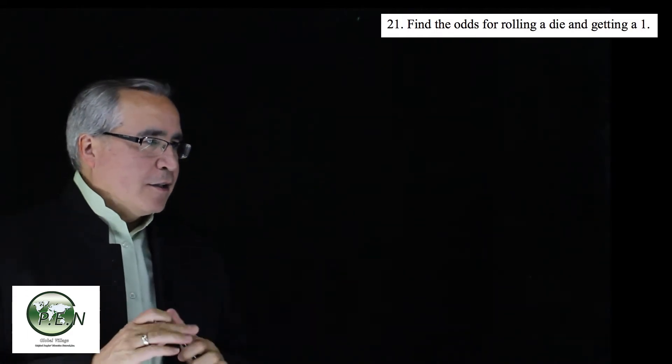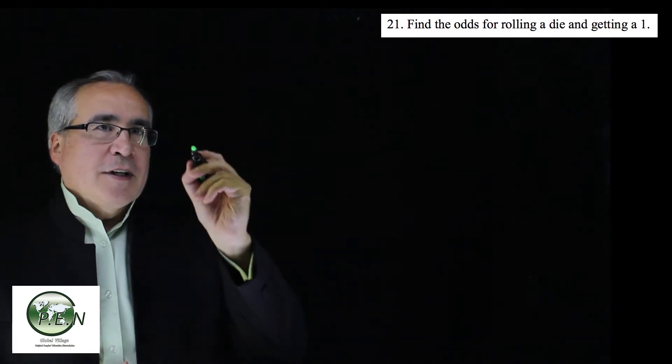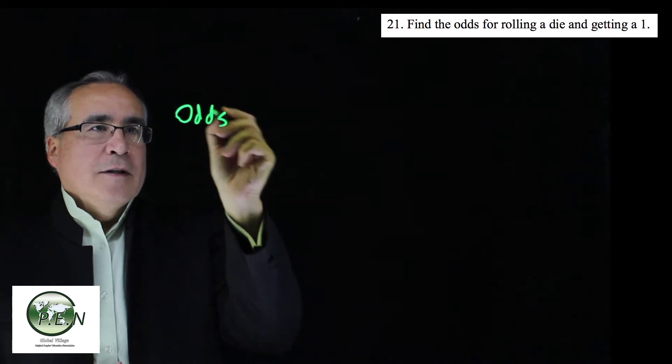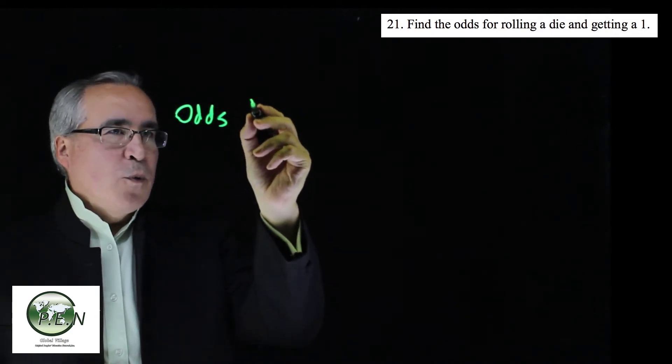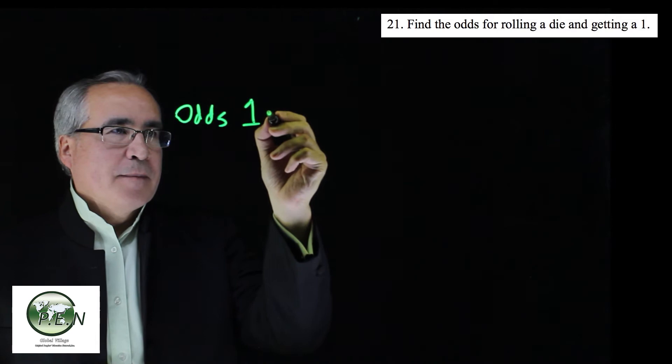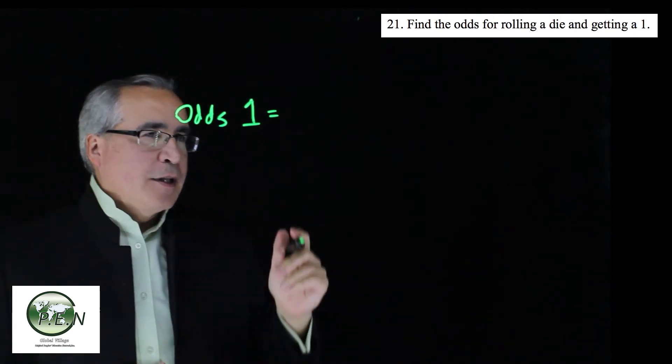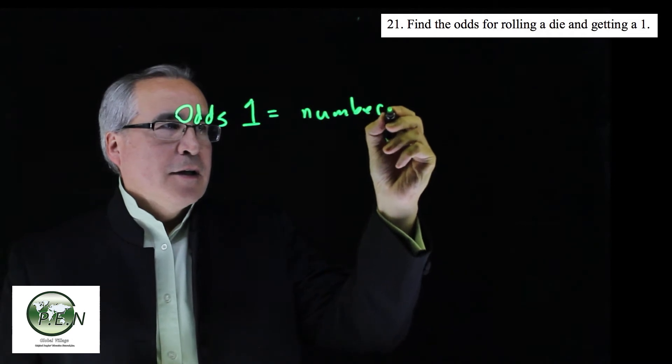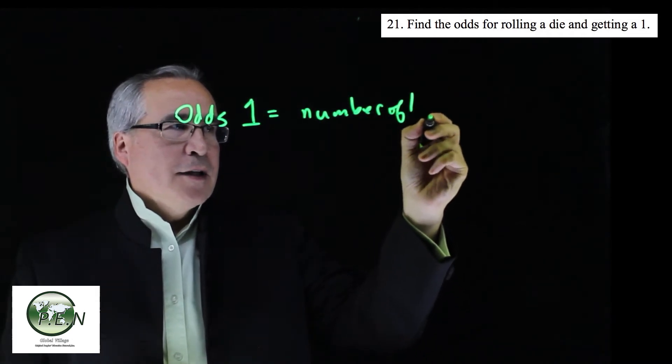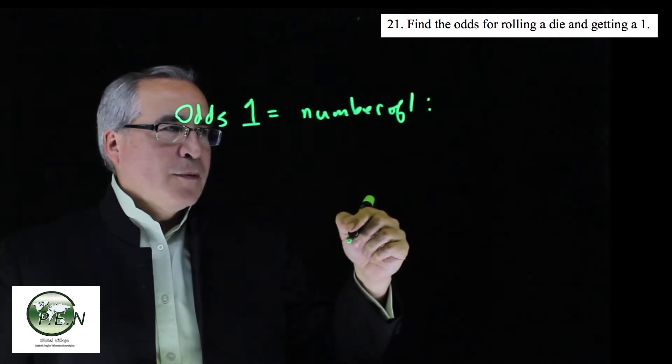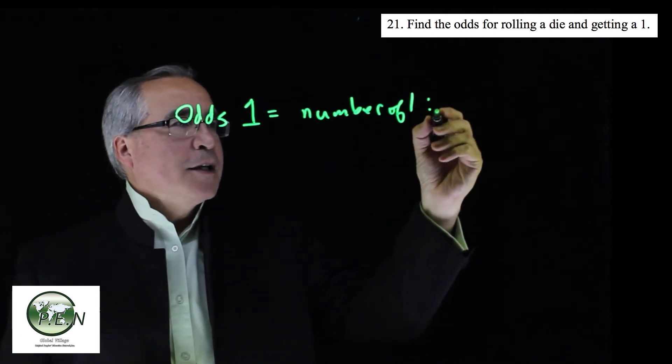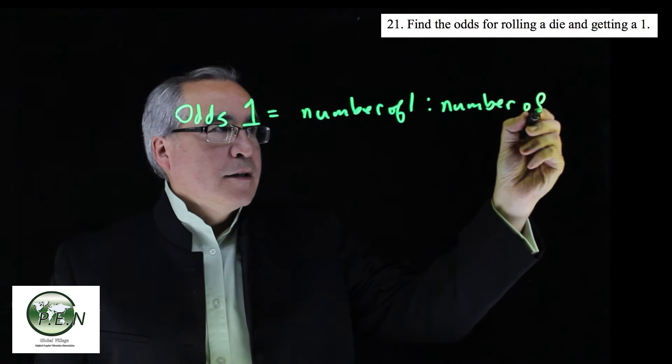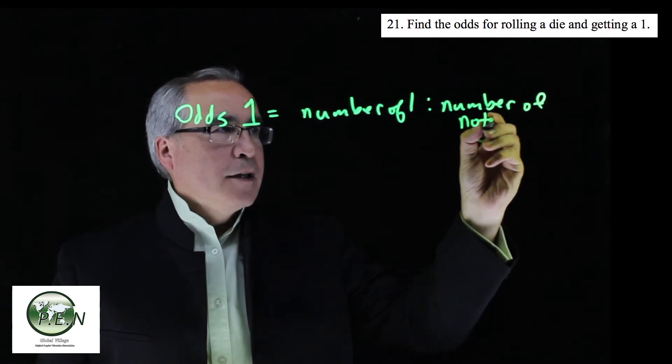So let's just take a look at this 21, which is asking for what are the odds of rolling a 1 on a die. So this is going to be the number of 1s with a ratio to the number of not 1.